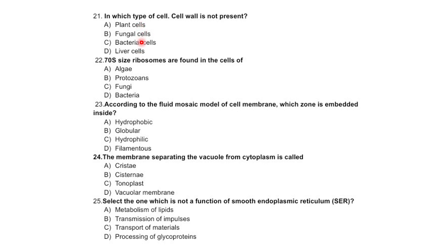70S ribosomes are found in the cells of algae, protosomes, fungi, or bacteria — correct option is bacteria. According to the fluid mosaic model of cell membrane, the base zone is embedded inside as hydrophobic, lobular, hydrophilic, or filamentous — the correct option is hydrophobic.